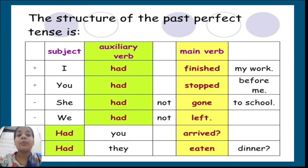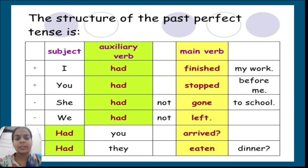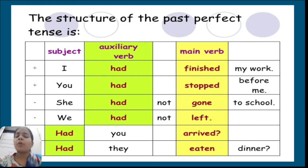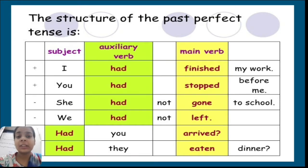Now let's look at the structure for forming sentences in past perfect tense. It is a combination of two elements: first, an auxiliary verb 'had', which goes with all types of subjects; and then the past participle form of the verb. For regular verbs, the combination is base plus 'ed'. For irregular verbs, which I have already shown you in the table, it will change according to that, and you have to learn how those verbs change.